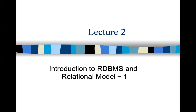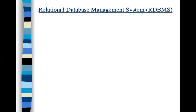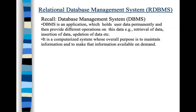We started the history, evolution, and introduction and reached the relational model. Last time we discussed the different types of databases: a central database, a distributed database, and a data warehouse — three major types.